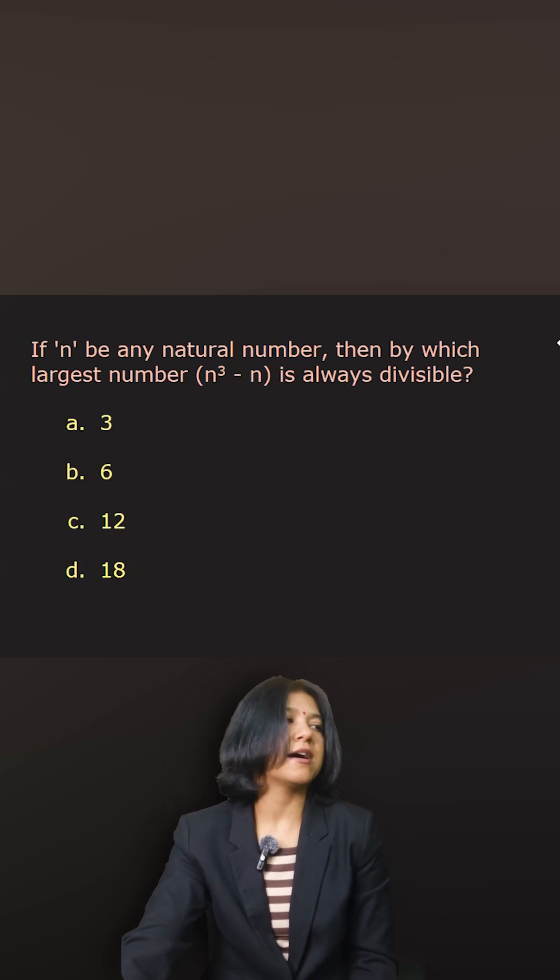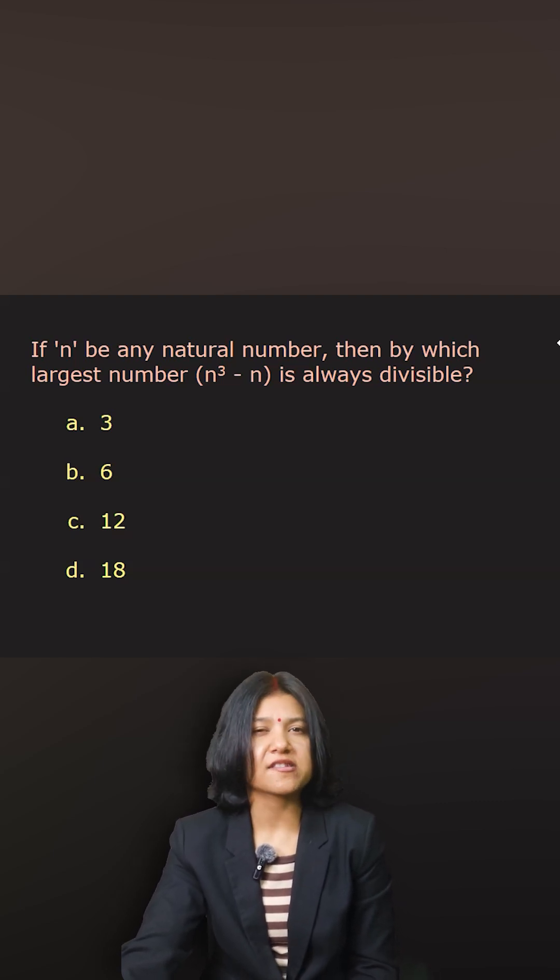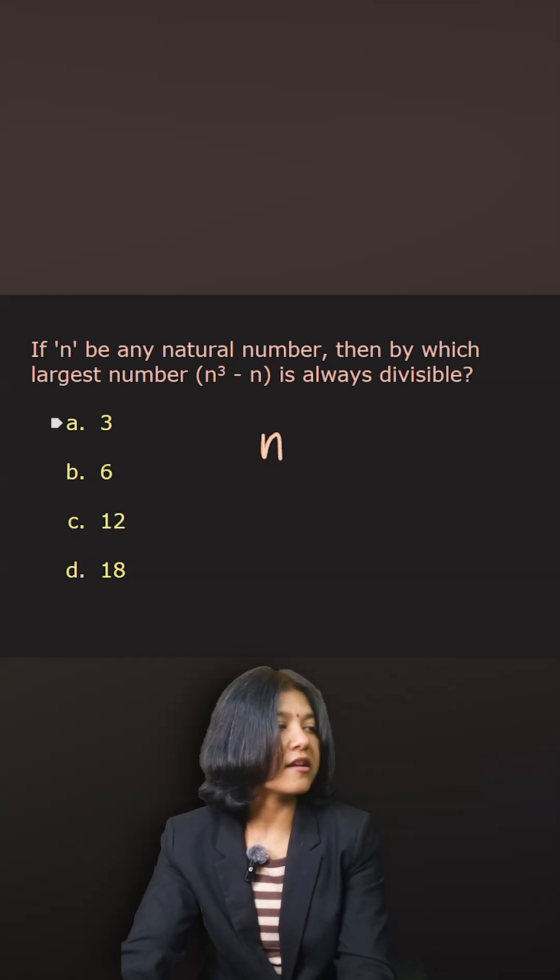If n is a natural number, then what is the largest number that divides n³ - n? Because you don't have any numbers, just variables, I will use algebra. n³ - n can be factorized.